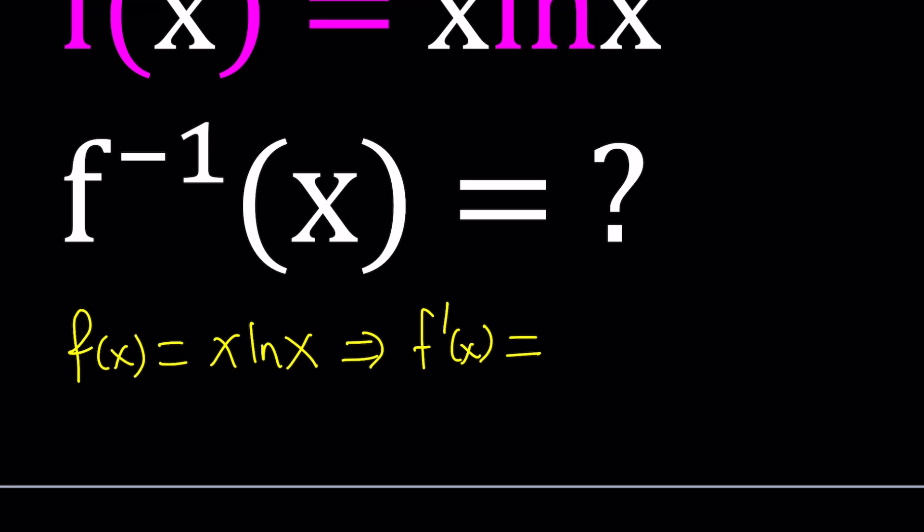How do you find f prime? If you know a little bit of rules for derivatives or rules of differentiation, you should know the product rule which tells you the derivative of the first function times the second function plus you do the same thing for the second function and so on. So the derivative of x is 1 times ln x plus the derivative of ln x which is 1 over x, something you should memorize, multiply by the first function. When you simplify this, you get something like ln x plus 1.